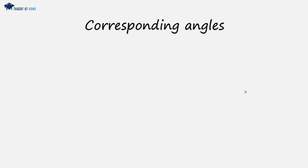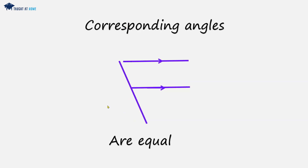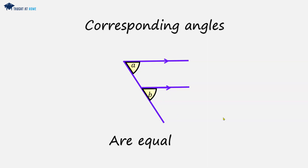Now we have corresponding angles — we can call these F-shaped angles. We have two parallel lines and a straight line that cuts through them. The corresponding angles are equal; in this case they are both 90 degrees. Instead of a straight vertical line, we might have a diagonal line — we still get the F-shape with two parallel lines.